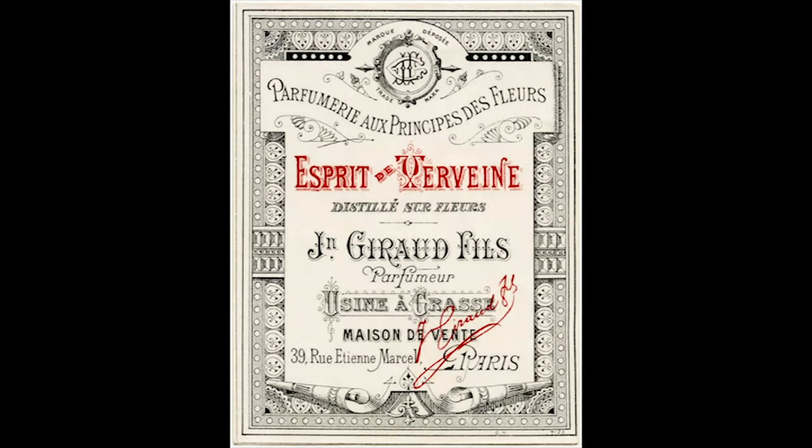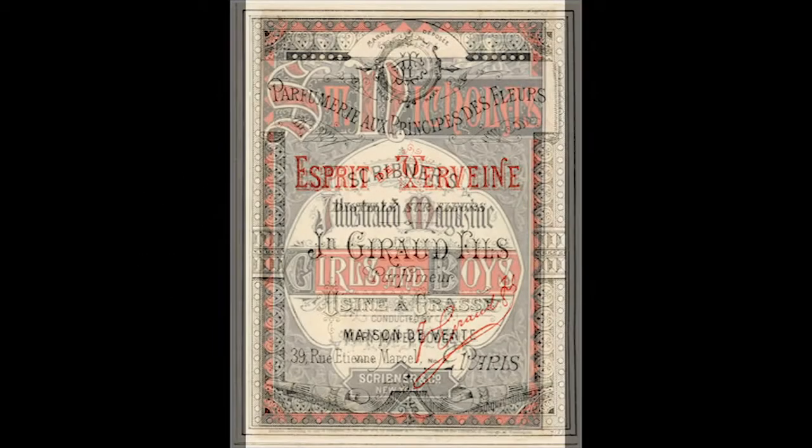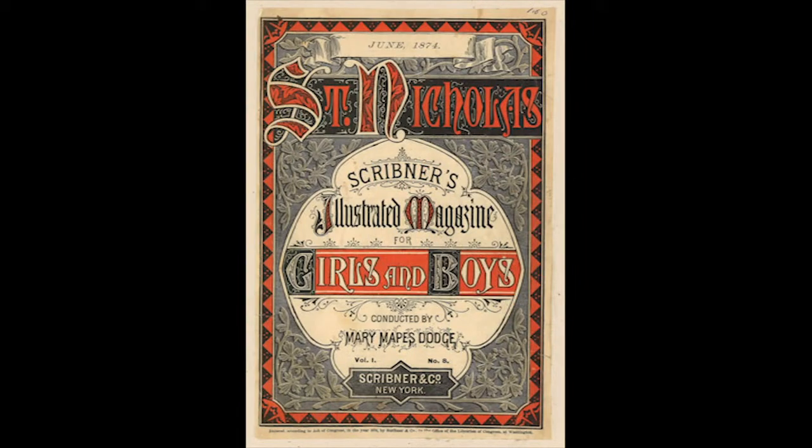The Victorian style was a decorative art style during the Victorian era. Victorian design can be described as indulgent, excessive, and ornamental.